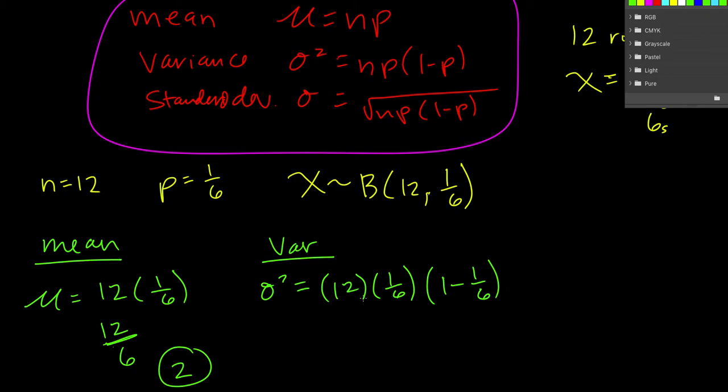So when we do this, we've already figured this out, we know that's a 2. When we do this, we're going to think of 6 over 6. So 6 minus 1 is 5 sixth. So that gives us 10 sixths, or if we reduce that, 5 thirds.